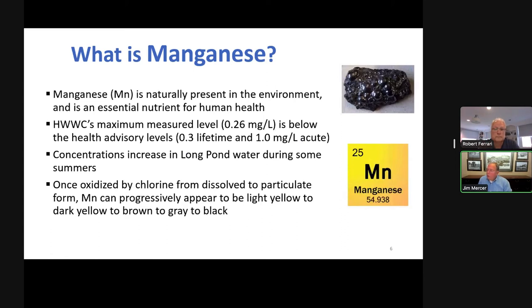As you know manganese has been problematic for the past few summers. It's naturally occurring in the environment. Our maximum measured level 0.26 is below the health advisory but concentrations increase in Long Pond during the summer. Some summers, not every summer but the last few. For decades we didn't have any situations with manganese. Now like many other utilities in the Northeast we're having manganese issues. Once oxidized by chlorine, Bob will explain this in more detail, they can cause color. That's the color that some people have seen in their water.